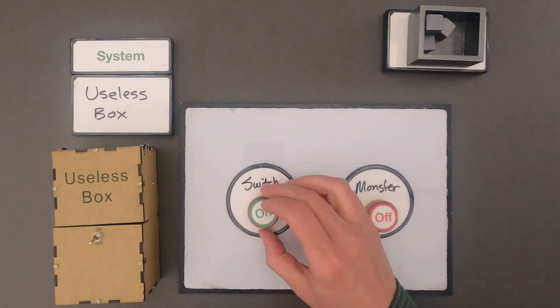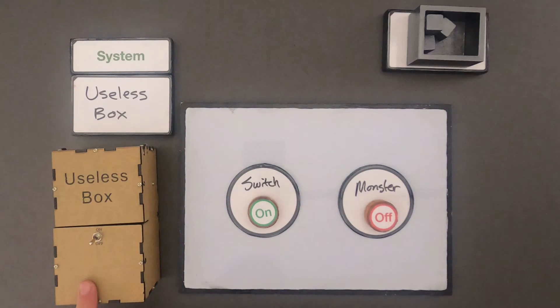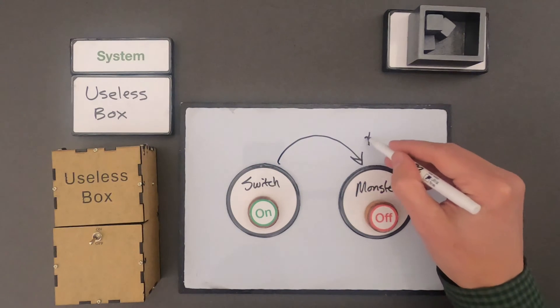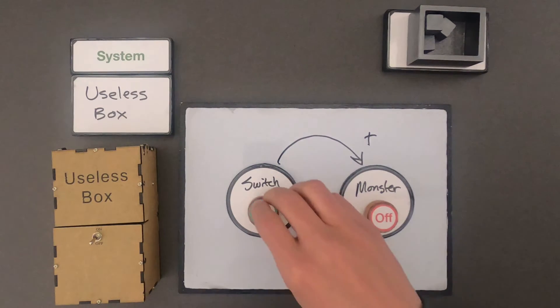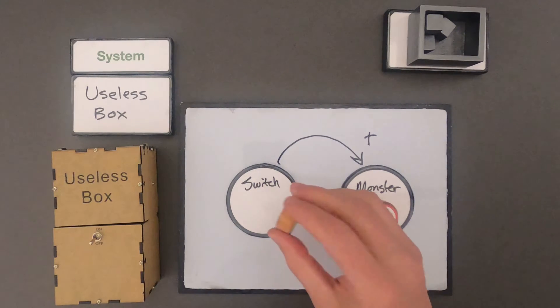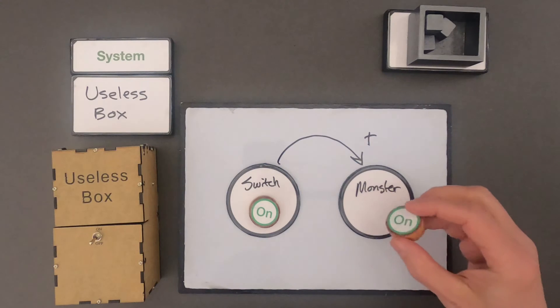When I turn the switch on that turns the monster on. So a way for me to represent that is to use an arrow. And this is a positive relationship. So for me to go over that again, the switch is in an off position. When I put it in an on position that turns the monster on.